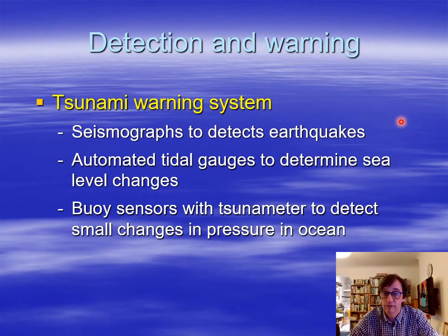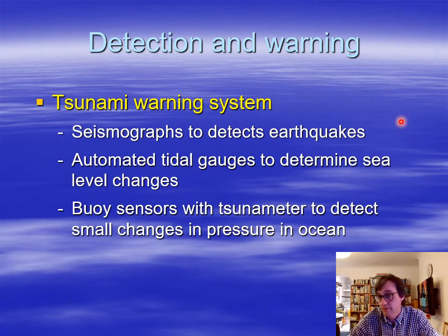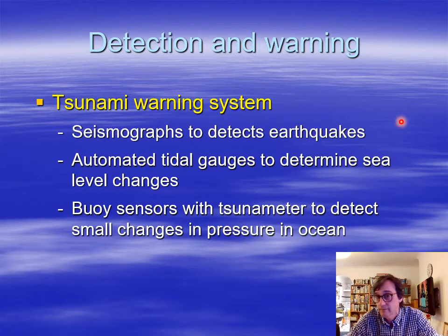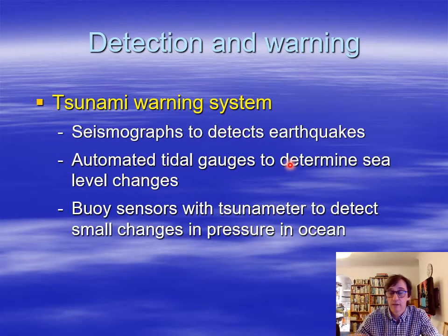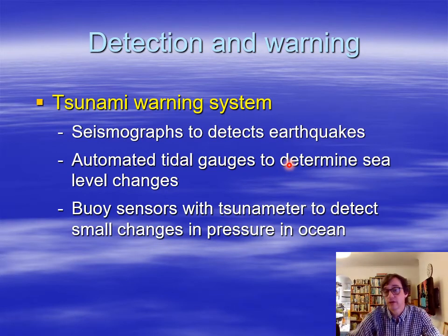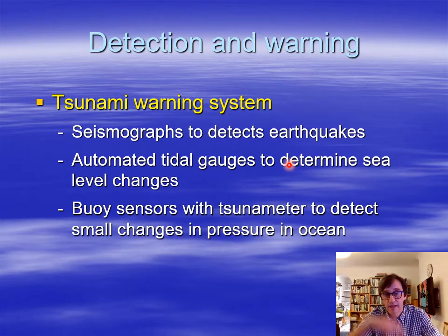These tsunami warning systems use a couple of devices. Seismographs first of all — remember they're caused mainly by seabed earthquakes. Seismograph networks detecting these earthquakes, quickly locating the epicentres and seeing if they are subduction zone ones — which are the ones often causing the large tsunamis. Also automated tidal gauges to determine sea level changes — you have a whole network of tidal gauges on all coastlines of these ocean basins affected by tsunami, constantly measuring sea level.